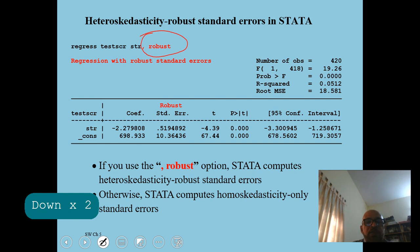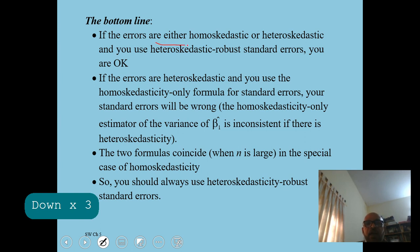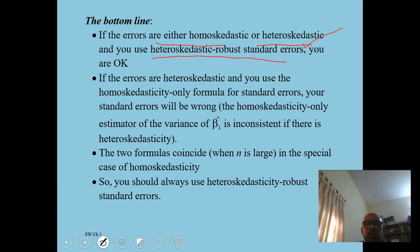Do not use homoscedastic standard errors, because they may be too small when there is heteroscedasticity, leading to wrong results. If you don't use robust, standard errors will be different. The bottom line: always use heteroscedastic robust standard errors. If errors are heteroscedastic and you use homoscedastic standard errors, your results will be incorrect. But if you use heteroscedastic robust standard errors and there is no heteroscedasticity, there will be no negative impact on your results.